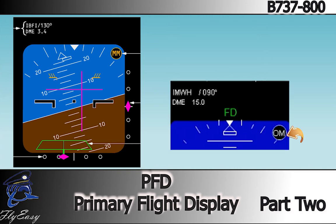The Marker Beacon Indication — OM for Outer Marker, IM for Inner Marker, or MM for Middle Marker — is displayed flashing when over the associated marker.